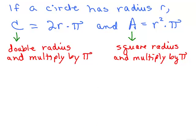Here's the summary, and this is why I like to think of the formulas this way. If a circle has radius r, the circumference is 2r times pi, and the area is r squared times pi. If you're looking for the circumference, you double the radius — that's what 2r means — and multiply by pi. But if you want the area, you square the radius and then multiply by pi. Think of area as usually in square feet, and that's why you're squaring the radius.